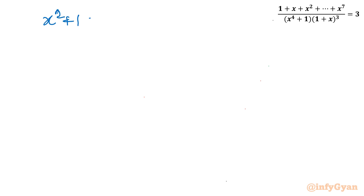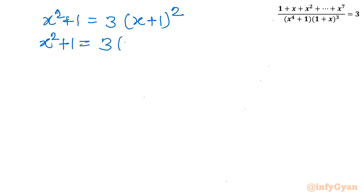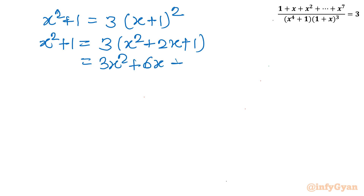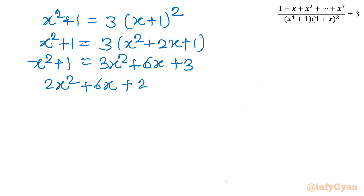Expanding the right hand side: 3(x + 1)² = 3(x² + 2x + 1) = 3x² + 6x + 3. The left hand side is x² + 1. Taking all terms to one side: 3x² − x² + 6x + 3 − 1 = 0, giving 2x² + 6x + 2 = 0. Dividing through by 2 gives x² + 3x + 1 = 0.